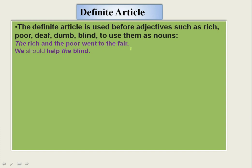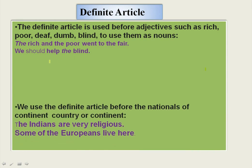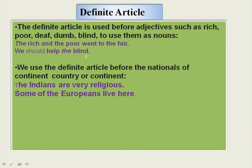'The rich and the poor went to the fair.' Here, 'rich' and 'poor' are adjective words. But when we use the definite article 'THE' before the adjective 'rich,' it changes into a noun — 'the rich' means 'the rich people.' Similarly, 'the poor' means 'the poor people.' And 'We should help the blind' — 'the blind' means 'the blind people.' When you use 'THE' before the adjective 'blind,' it becomes a noun.